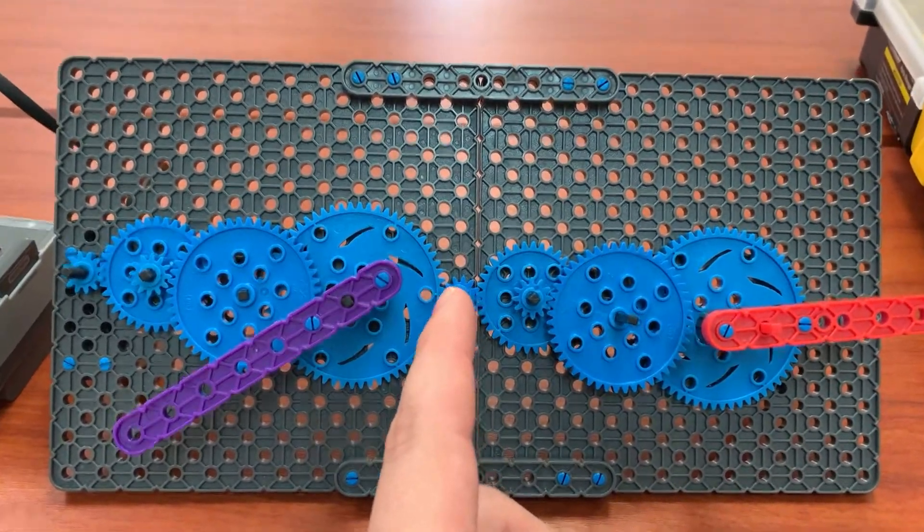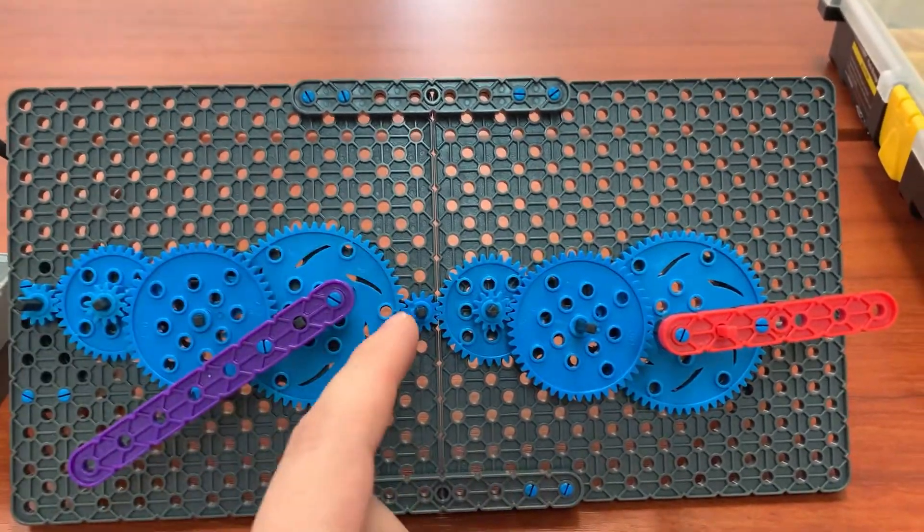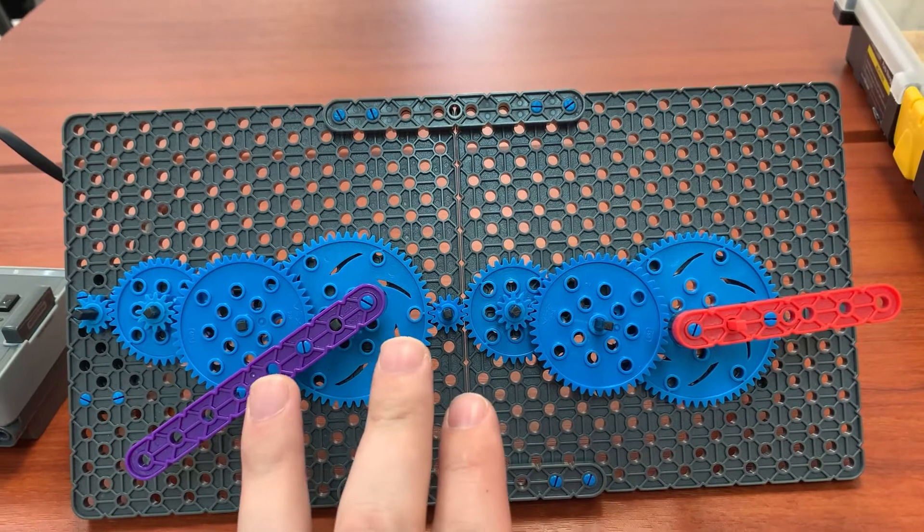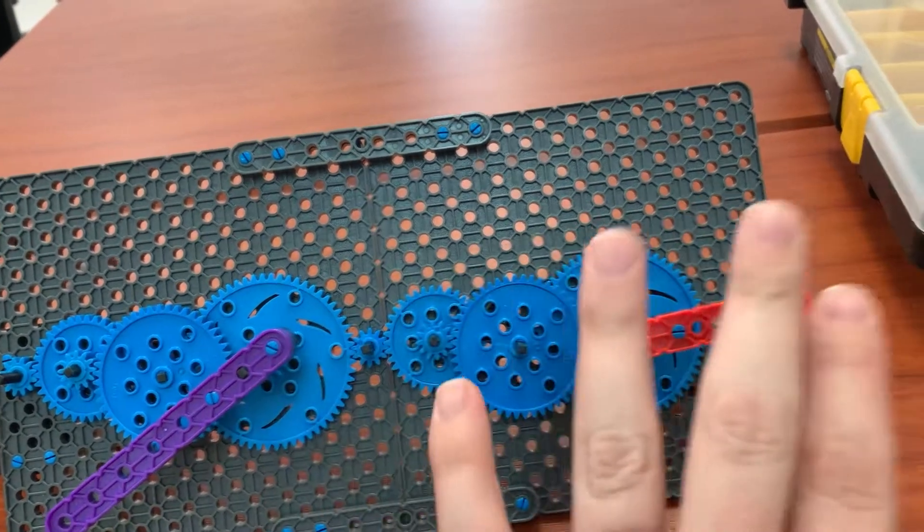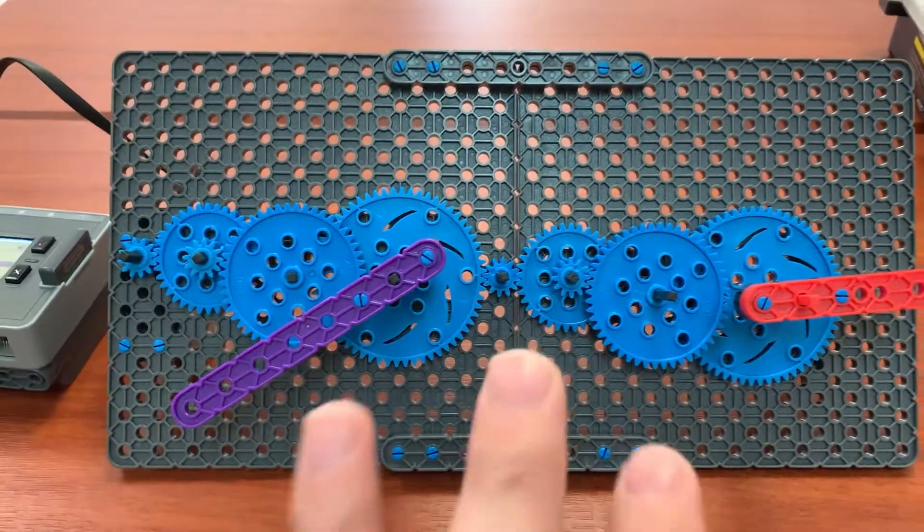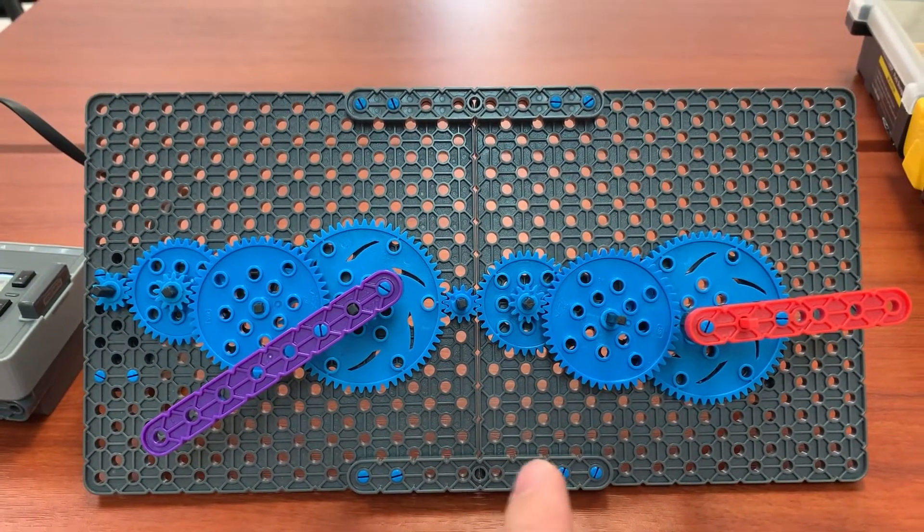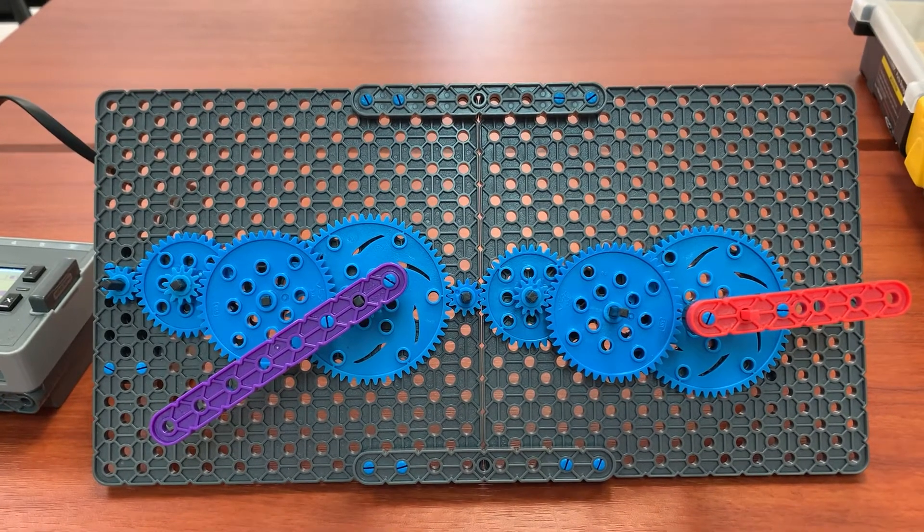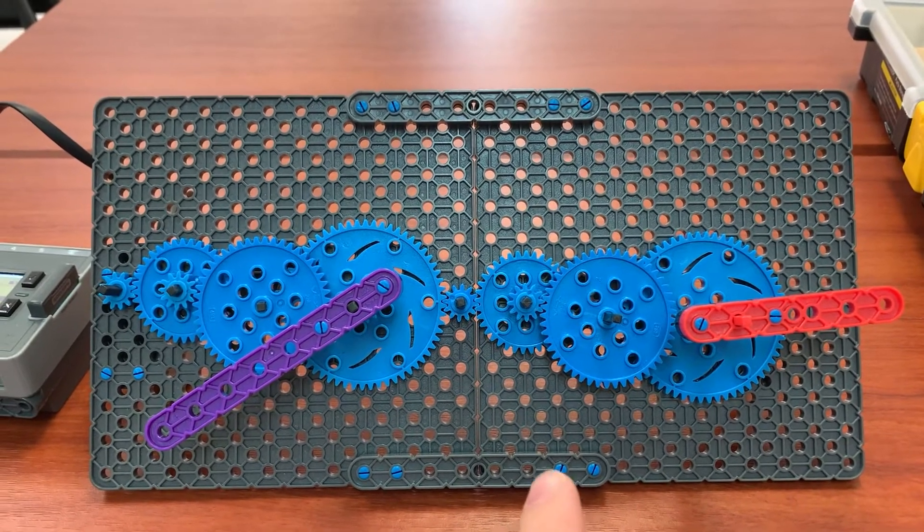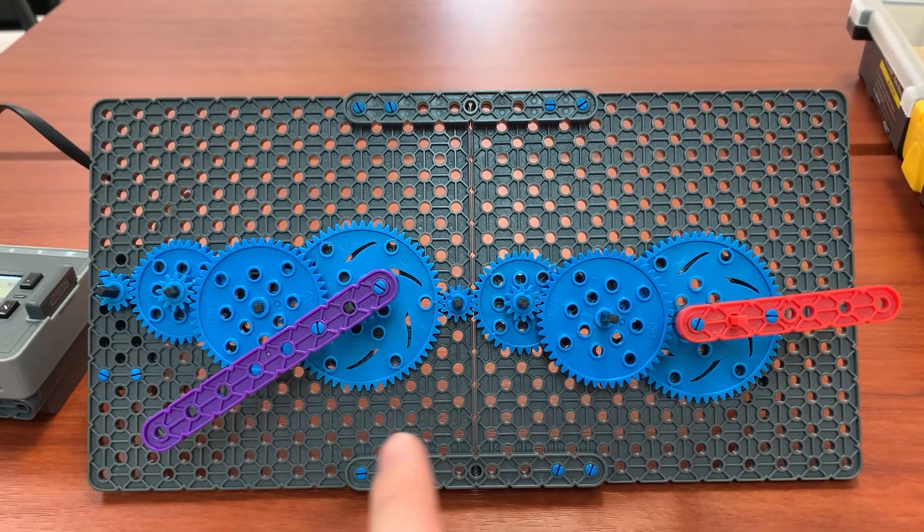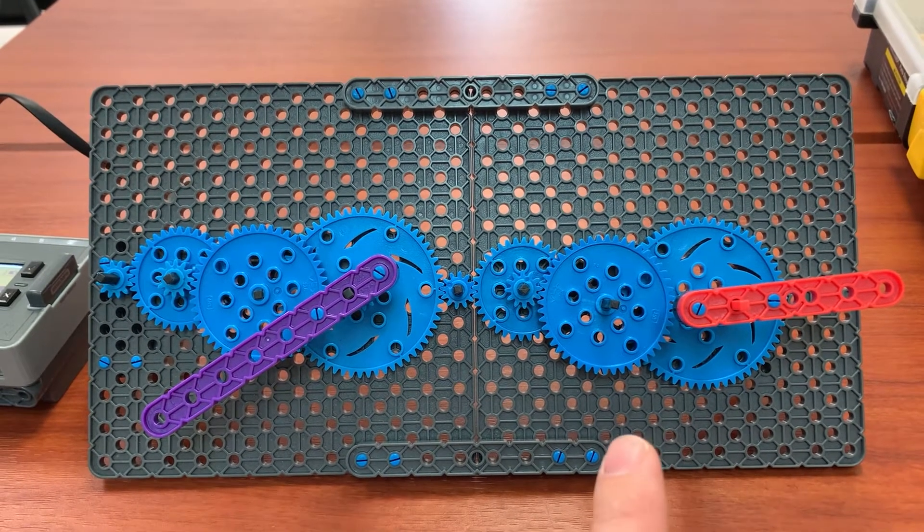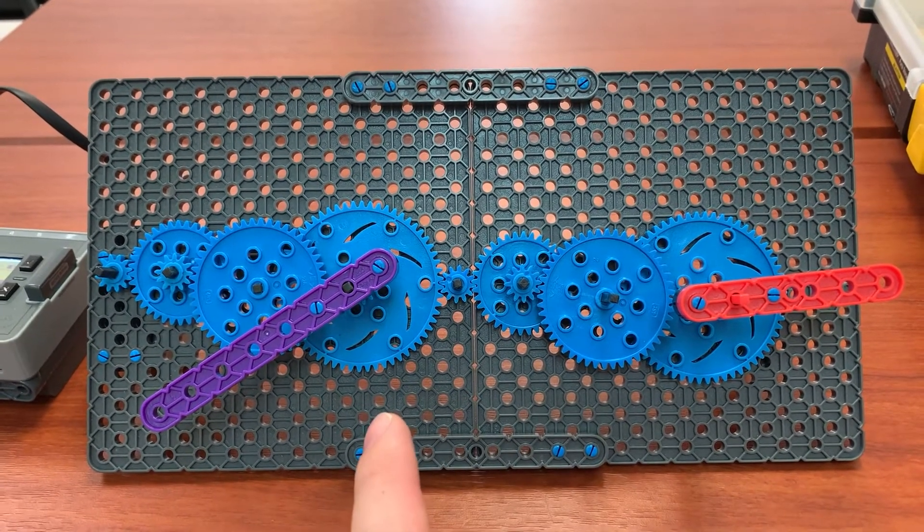However, and this is something that we'll talk about next week, he does have an error here in the drivetrain that causes this to not actually be a 3,600 to one gear ratio. I'm not going to go into it on this video. If you spot the error, if you know how to fix the error, you can mention that in the comments below. But I do see the error and I'm going to have the students look at this and analyze it next week to see if they can figure out why that error is there and how they might be able to fix it.